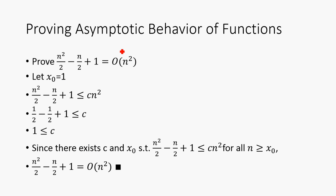So, we can use our definition to prove the asymptotic behavior of functions. For instance, let's prove that n²/2 - n/2 + 1 is Big-O of n². So, we're going to let our x₀ be 1. And then we're going to go ahead and solve for c. So, we have our relationship right here. And we're going to go ahead and plug in our 1. So, that just leaves 1/2 - 1/2 + 1 is less than or equal to c. Therefore, c is greater than or equal to 1.